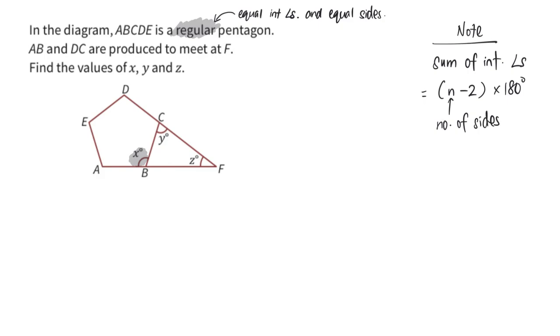So in this case, the sum of the interior angles for ABCDE pentagon, a 5-sided figure, is 5 minus 2 times 180 degrees. This will give me 540.